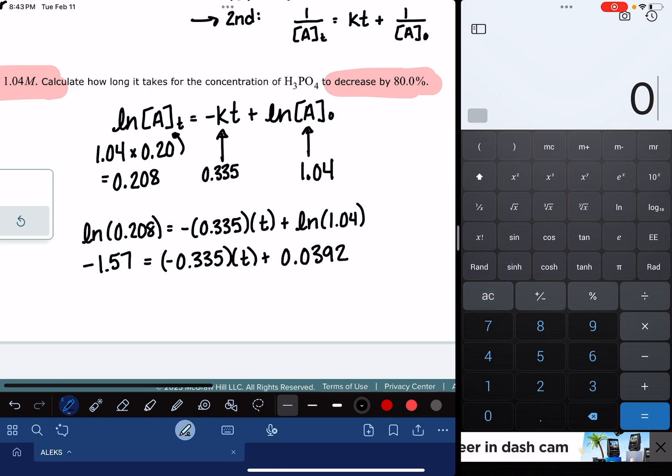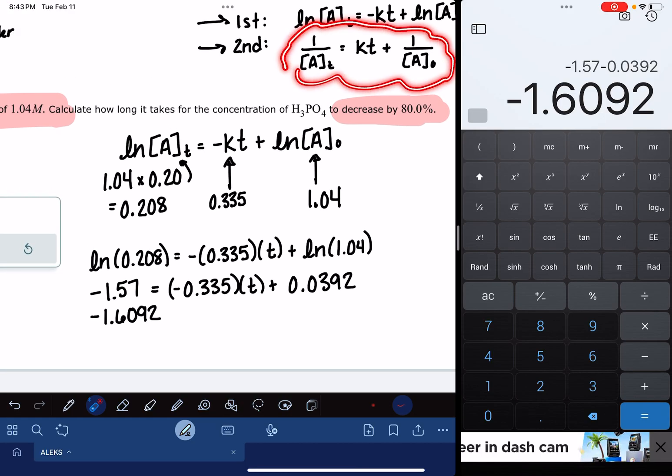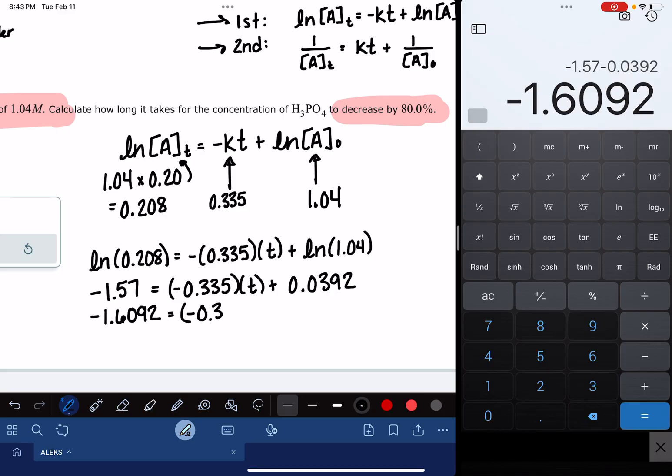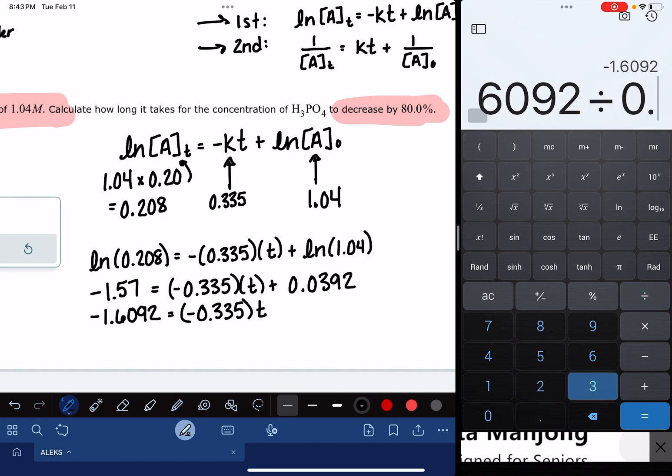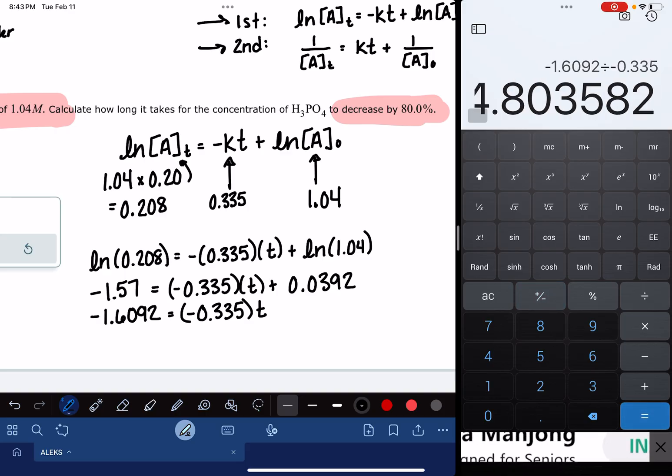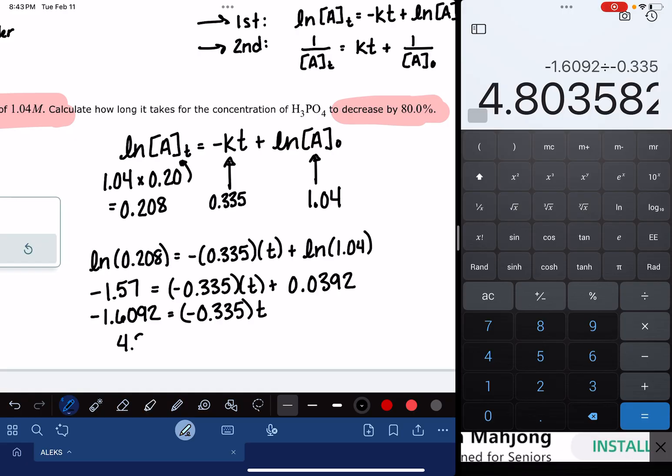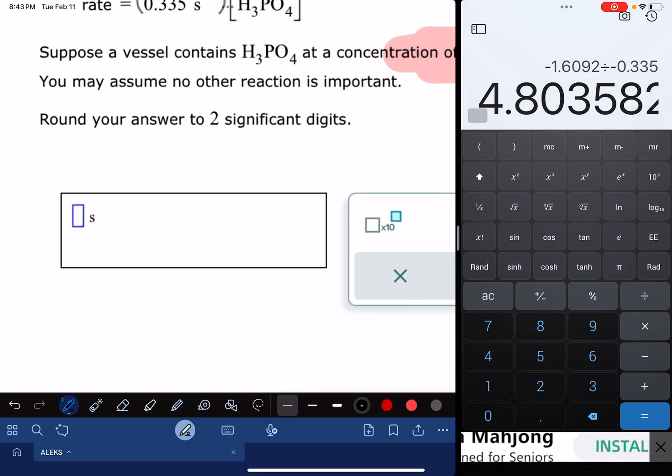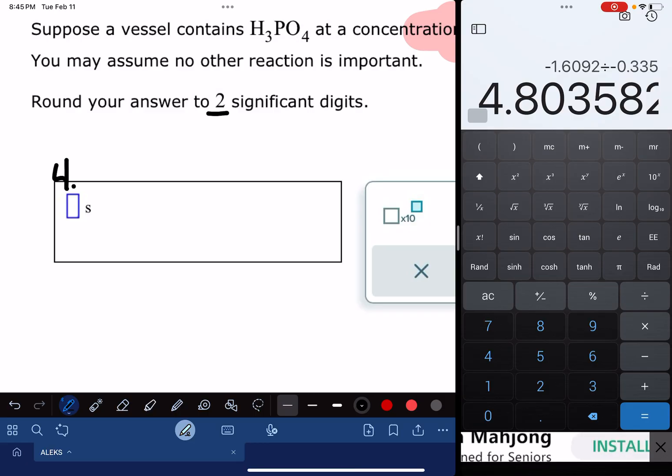And then I am going to go ahead and subtract 0.0392 from each side of the equation. And then, of course, if you have a second order reaction, you're actually going to be using this equation, which I think is a little bit easier to work with. Negative 0.335 times t. And then I just need to divide both sides of the equation by negative 0.335. And that gets me a time of 4.80 seconds. Looks like the time unit has been entered in there for us, and it wants two sig figs. So that's just going to be 4.8.